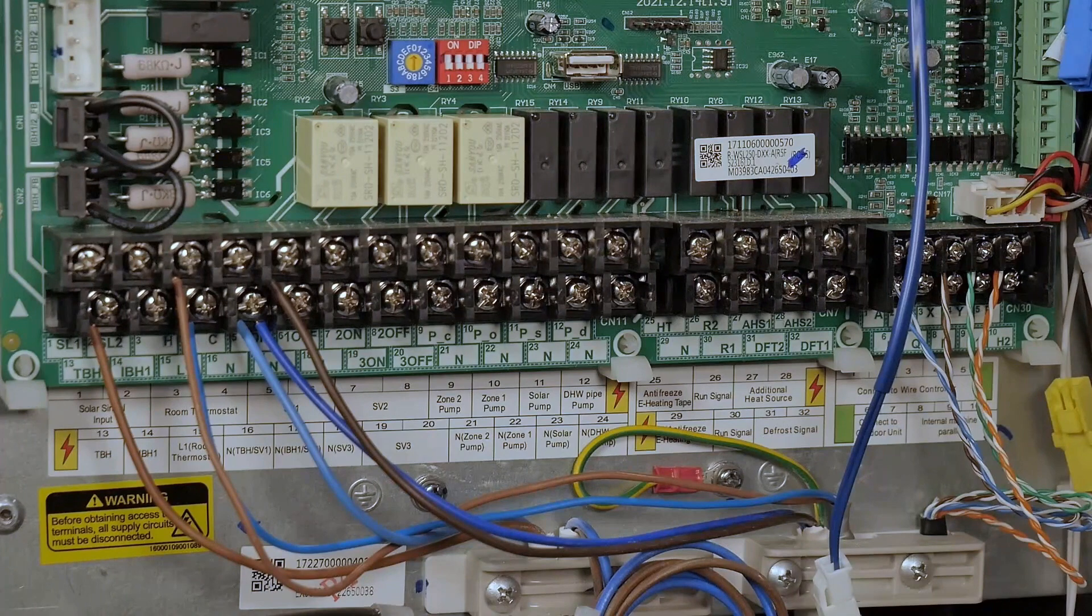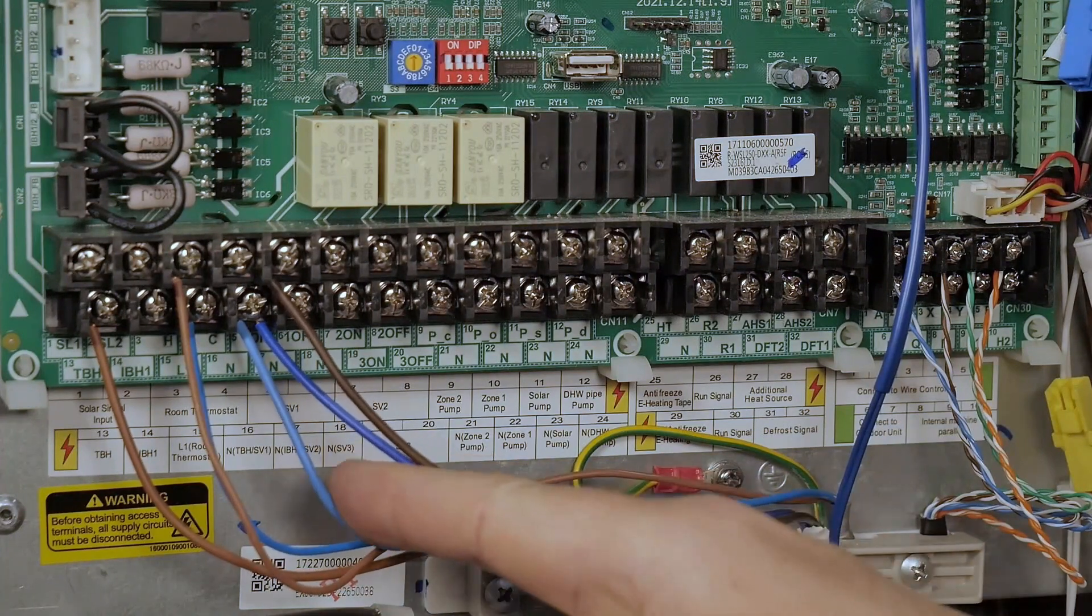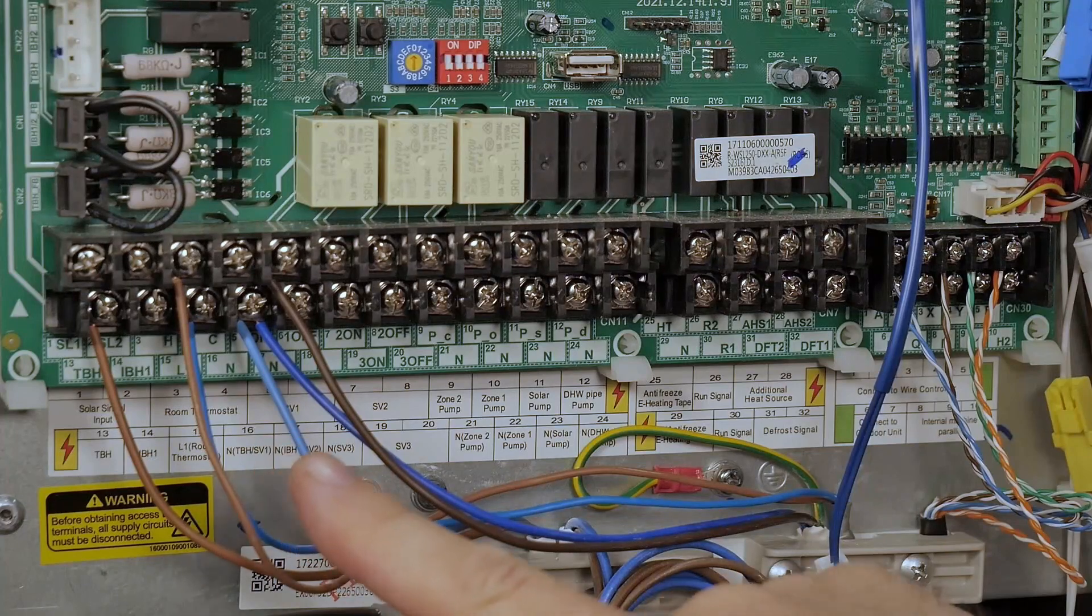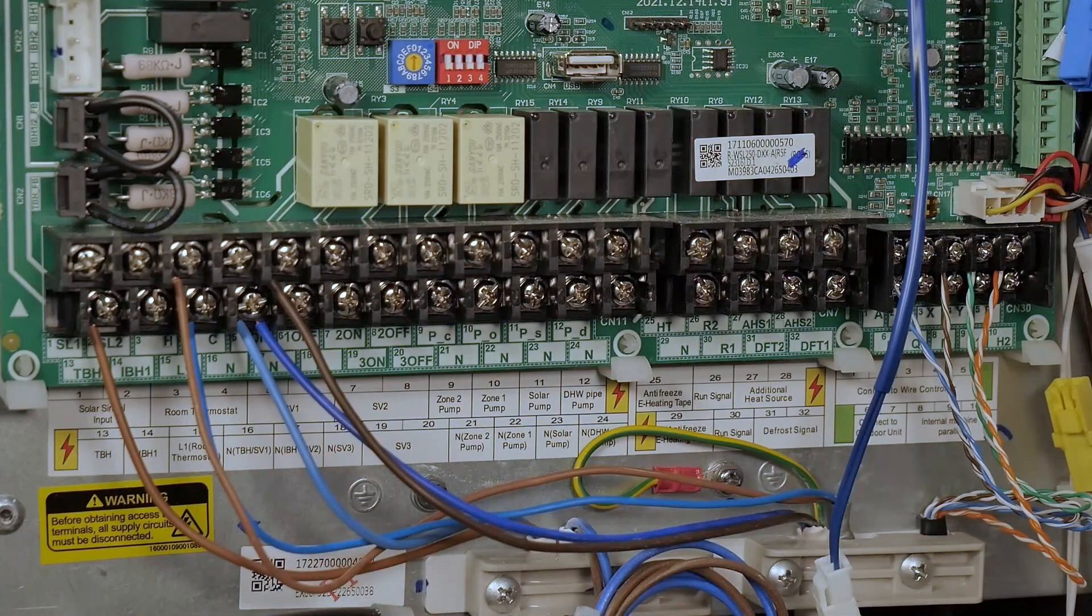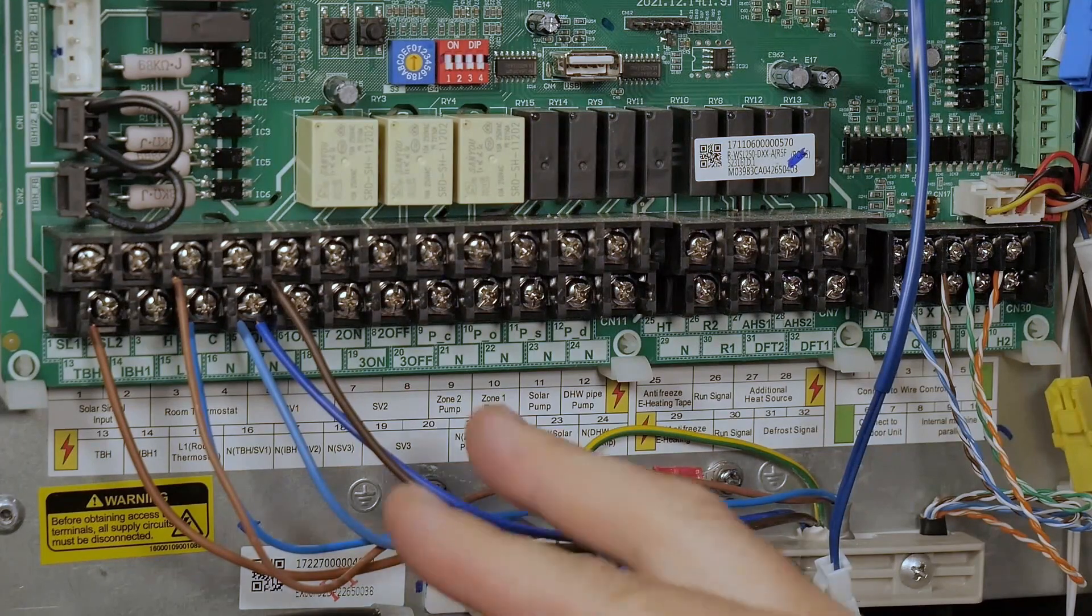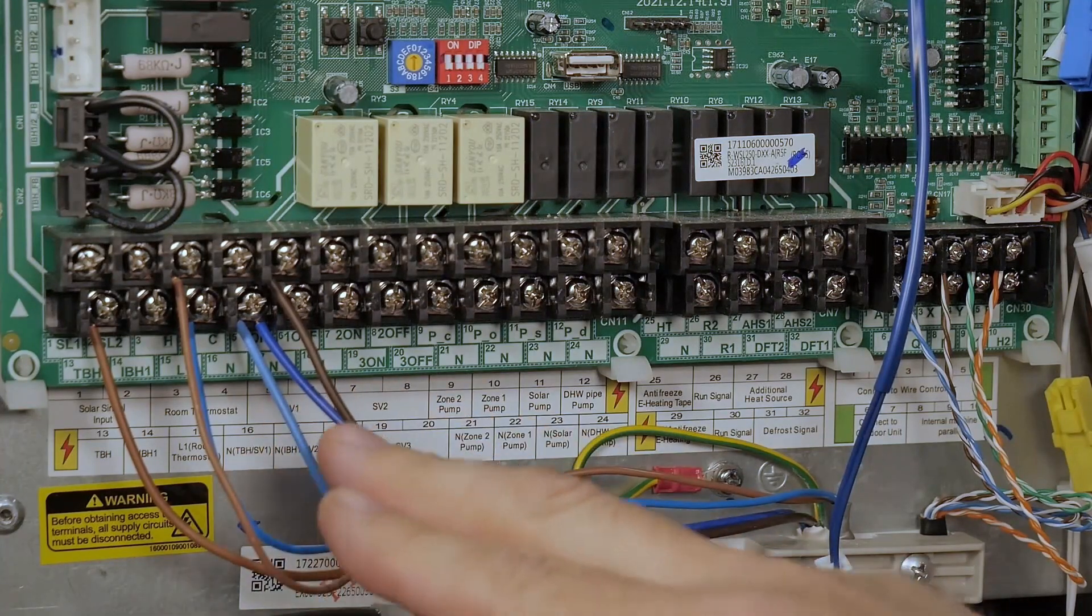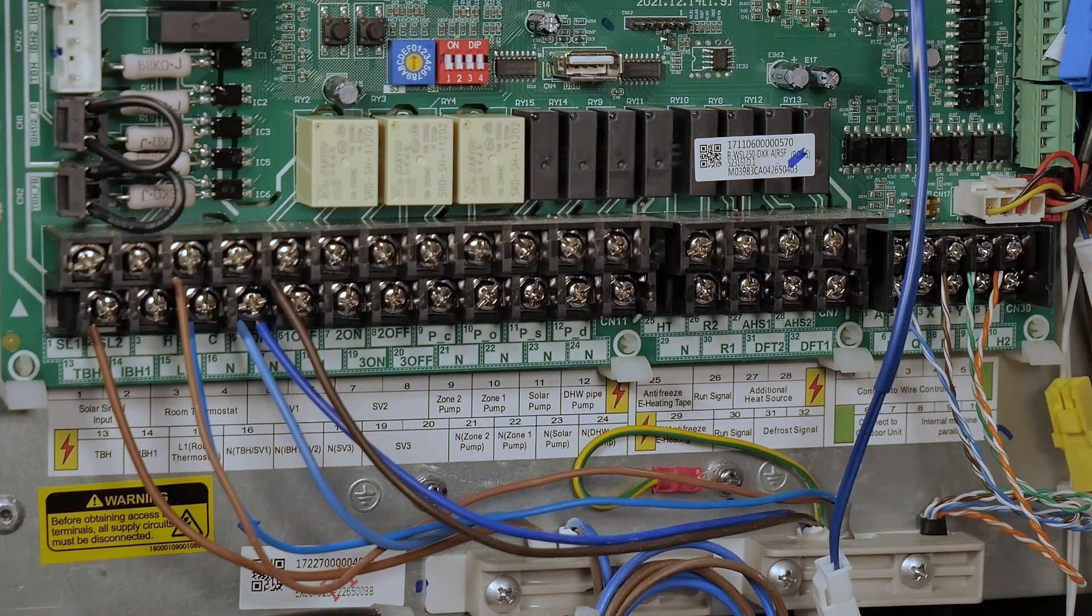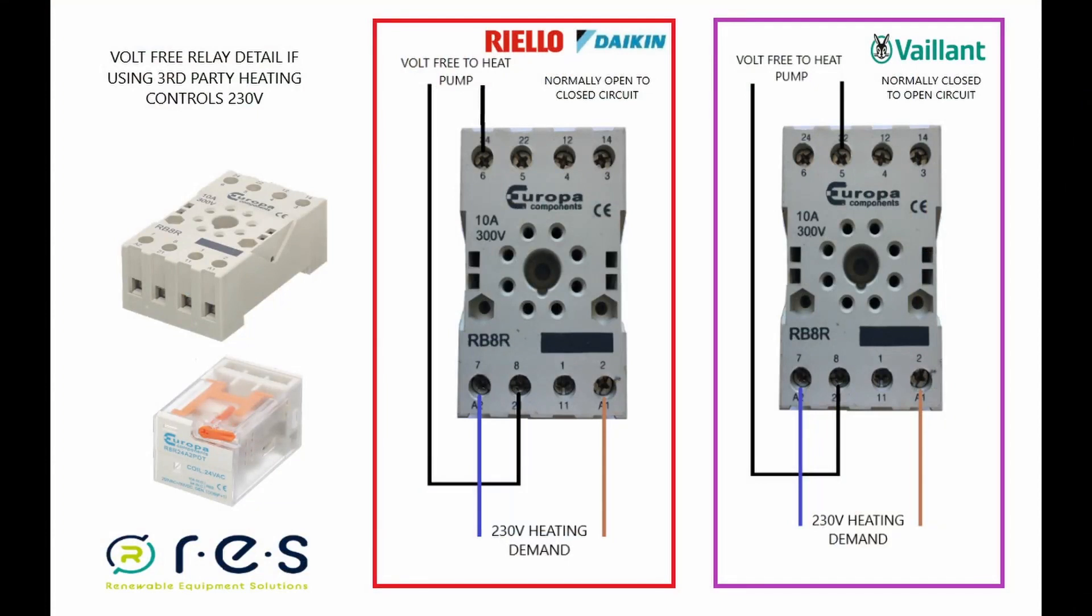If we look to terminals 13 and 16, they're marked for the immersion contactors. With the Riello unit, you will not be able to power an immersion from the contactors here - they are merely a signal to bring in a localized supply that is back near the immersion. So just for reference, you'd need a small contactor that's rated for, say, the immersion would be 20 amp contactor.